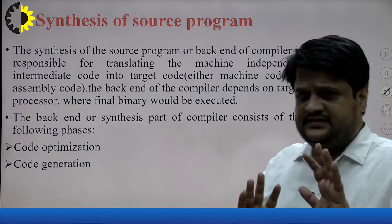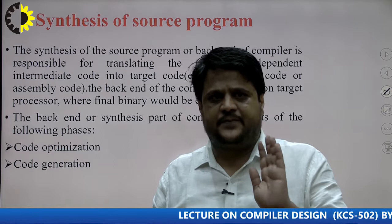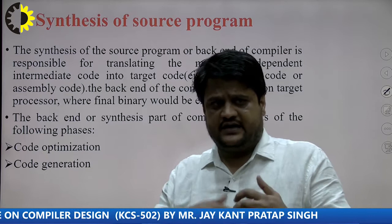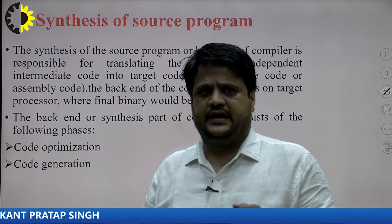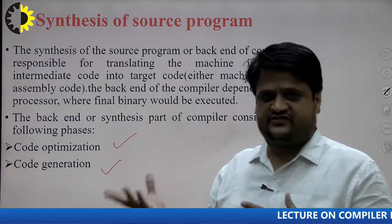Besides these phases, there is another part of the compiler called the synthesis of the source program, or the backend of the compiler. The backend is responsible for translating the machine-independent intermediate code into the target code, which may be machine code or assembly code. The backend of a compiler depends on the target processor where the binary will be executed. The backend consists of two phases: the code optimization phase and the code generation phase.